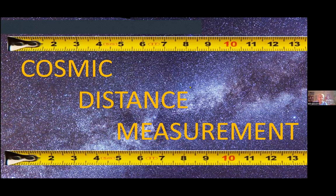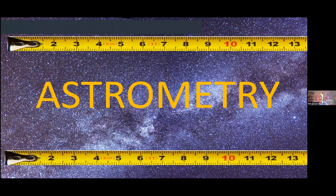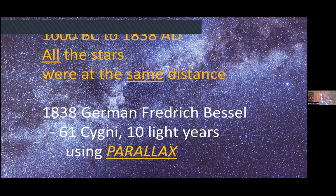The task of measuring cosmic distances is called astrometry — basically, measuring the stars. Going back to 1000 BC, all the way up until the 1800s, it was thought that all the stars were at the same distance. Then in 1838, an astronomer named Frederick Bessel, using a technique called parallax, found that a star called 61 Cygni was about 10 light years away. That was the beginning of astrometry and measuring cosmic distances as we know it today.